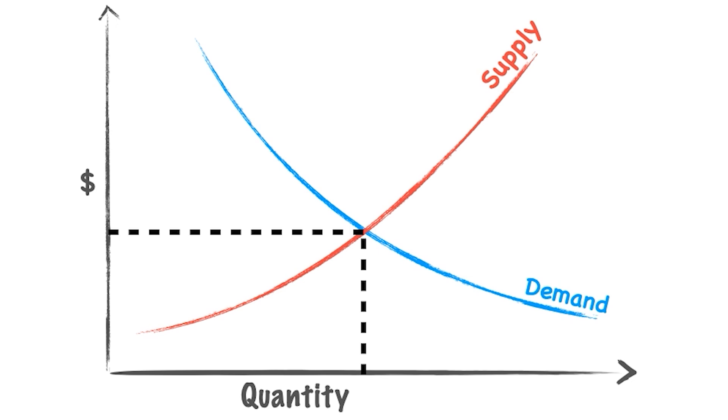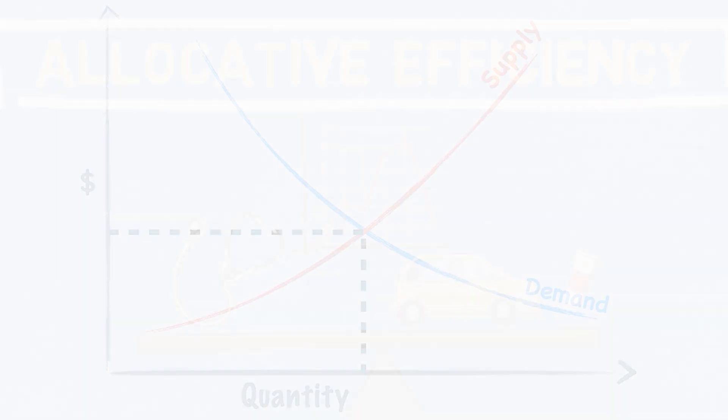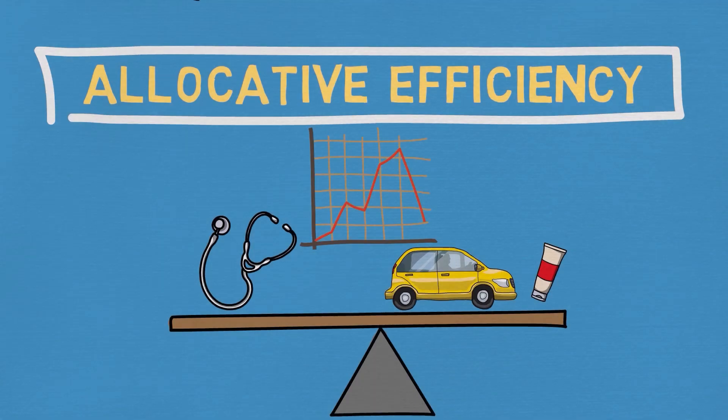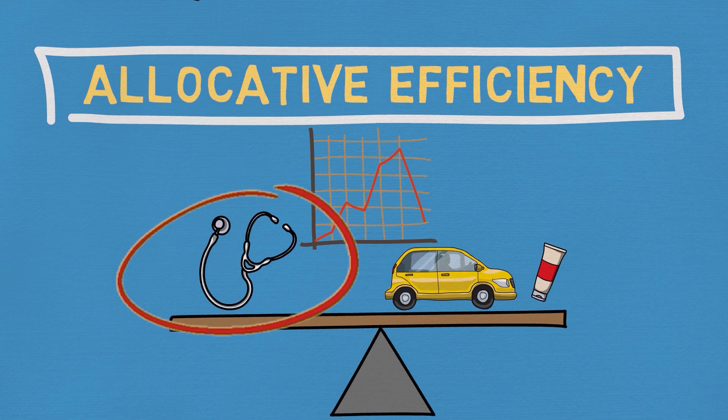Where the demand and the supply curve intersect, we have the optimal price and quantity for a product that works for both buyers and sellers in the marketplace — and we call this market equilibrium. But when it comes to healthcare, there are a few reasons why the markets don't work. Let's take a quick look at a few of them.